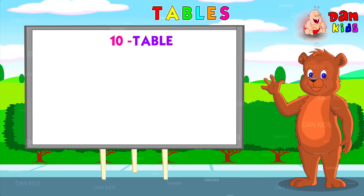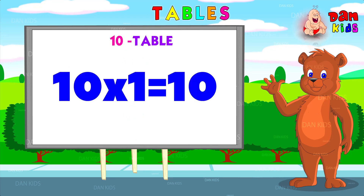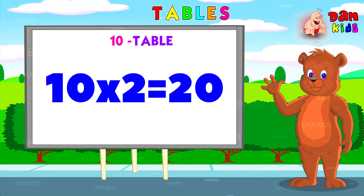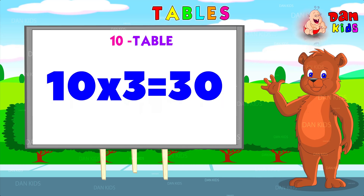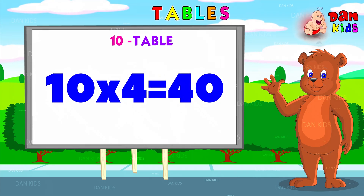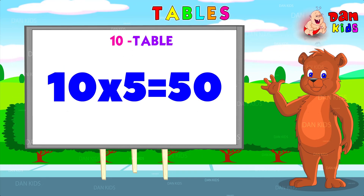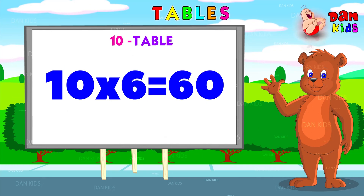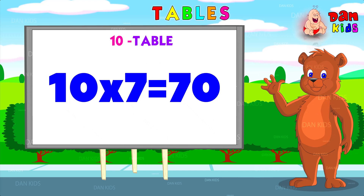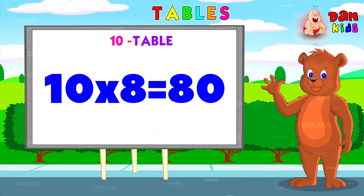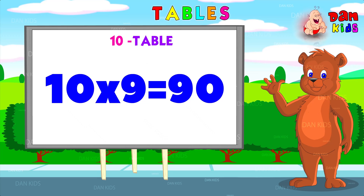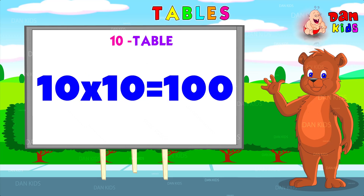Now the tenth table. Ten ones are ten. Ten twos are twenty. Ten threes are thirty. Ten fours are forty. Ten fives are fifty. Ten sixes are sixty. Ten sevens are seventy. Ten eights are eighty. Ten nines are ninety. Ten tens are one hundred.